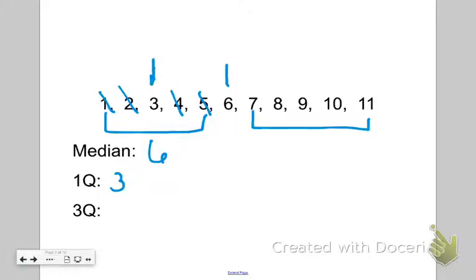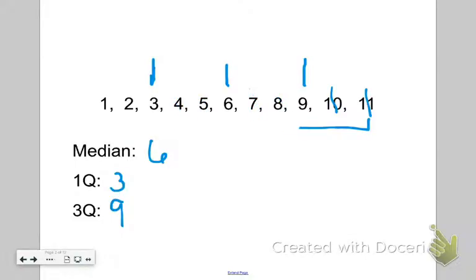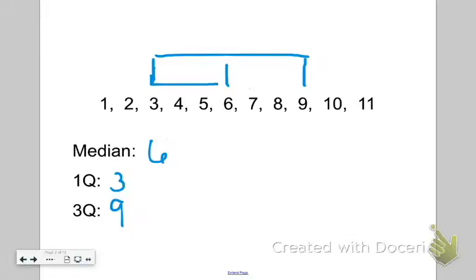For the upper half, it looks like it's going to be 9. I'm going to put a line above my 9. And there you have it — I have 3 lines for my median, my third quartile, and my first quartile. What I'm going to do next is connect them and make a box from my 3 lines. The center of my box has the median, the 6, and the ends of my box have the first quartile and the third quartile, 3 and 9.